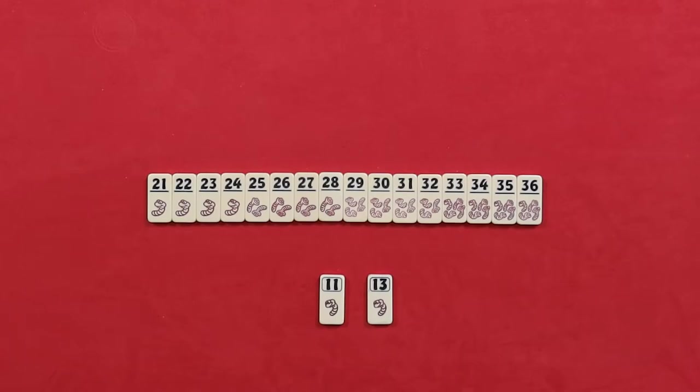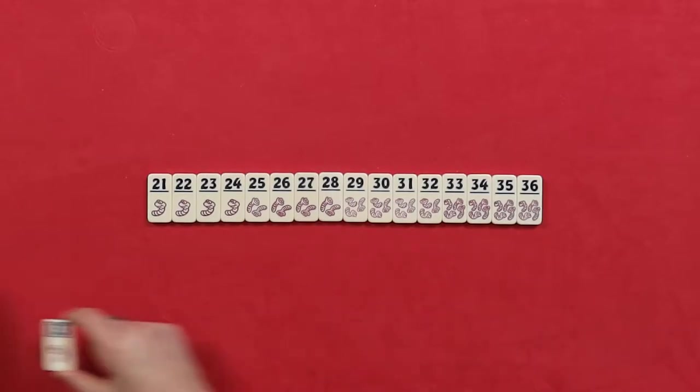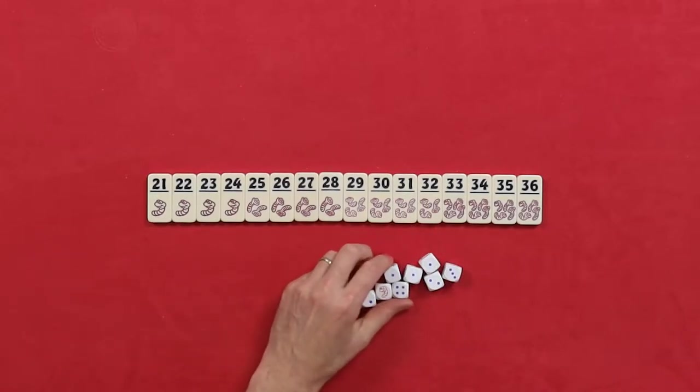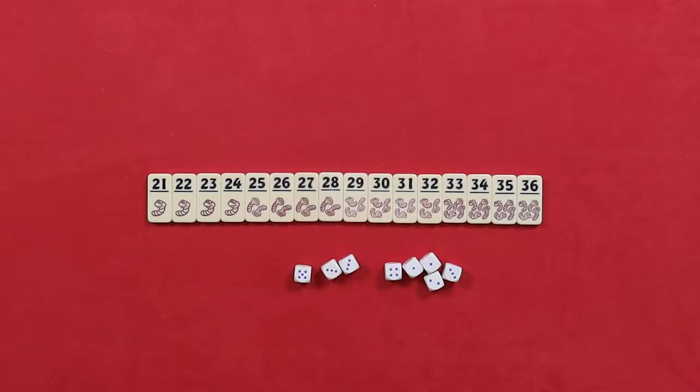Okay, let's set it up. Lay out the tiles in a row from 21 to 36. You can leave the 11 and 13 in the box. Then, take out the 8 white dice and leave all other bits in the box. We won't be using them in this game.